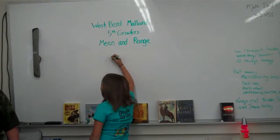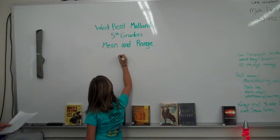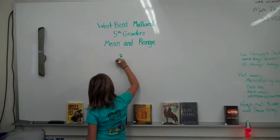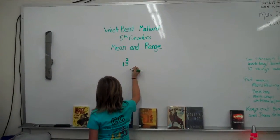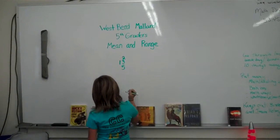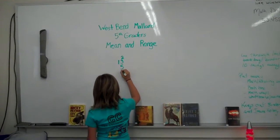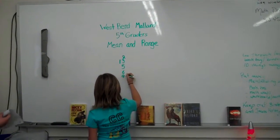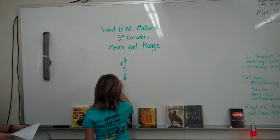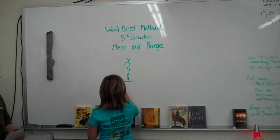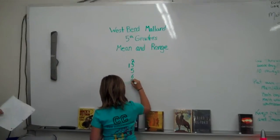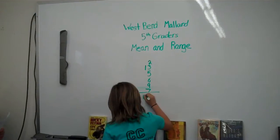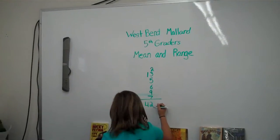Now, there are eight basketball players. One made two shots. One made thirteen shots. One made five shots. One made six shots. One made nine shots. Now you add them up.